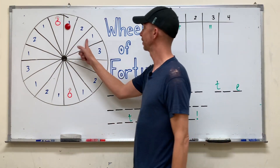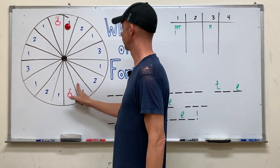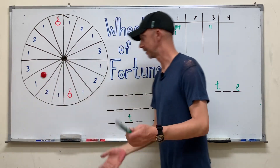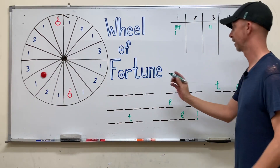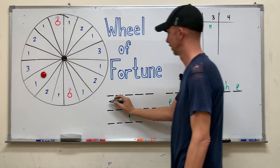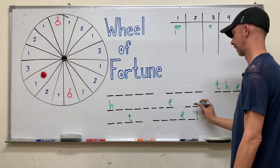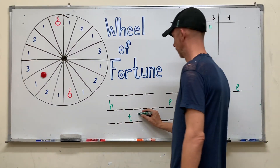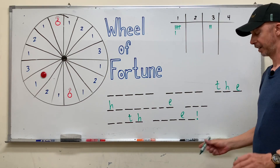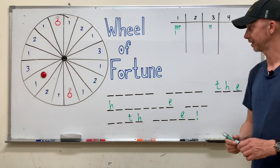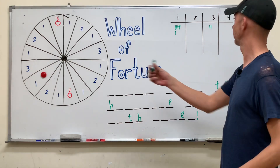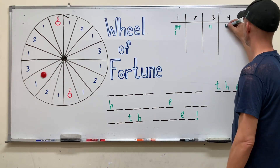Ten — one, two, three, four, five, six, seven, eight, nine, ten. Let's try H. There are one, two, three H's — three times one is three points.